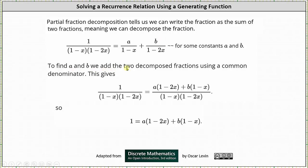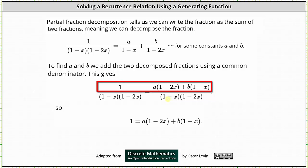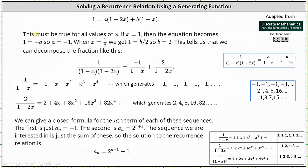To find A and B, we combine the two decomposed fractions using the common denominator (1 - x)(1 - 2x). This gives us 1 = A(1 - 2x) + B(1 - x). This equation must be true for all values of x, but selecting convenient values of x makes it much easier to solve for A and B.